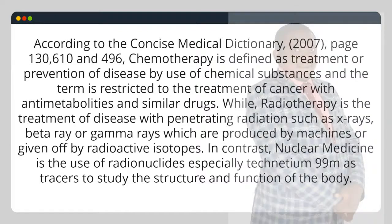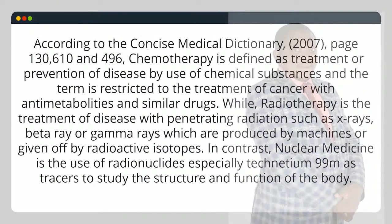According to the Concise Medical Dictionary, 2007, pages 130, 610 and 496, chemotherapy is defined as treatment or prevention of disease by use of chemical substances, and the term is restricted to the treatment of cancer with antimetabolites and similar drugs. Radiotherapy is the treatment of disease with penetrating radiation such as X-rays, beta rays or gamma rays which are produced by machines or given off by radioactive isotopes.